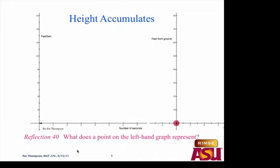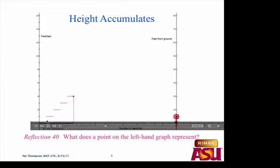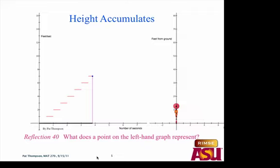So a point on the left-hand graph — let's pause it here. That point right there: what does it represent? Danny says: the rate at which the ball is moving and the time. Right, it's two pieces of information. A point on a graph gives you two pieces of information: the time elapsed and the current speed or rate.